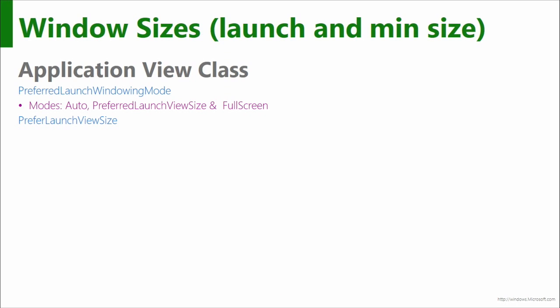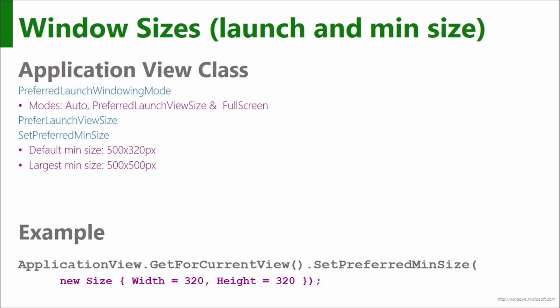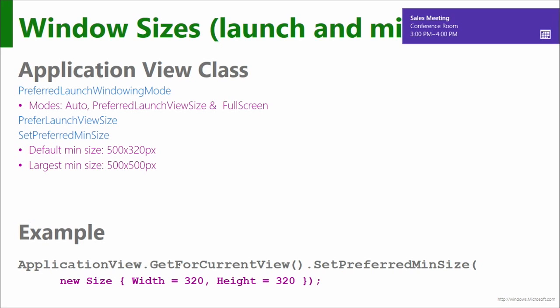This is the code that replaces the manifest minimum width entry: Application View, Get For Current View, Set Preferred Min Size. So it's not just the width but a height as well — you're telling the system the preferred minimum window size.